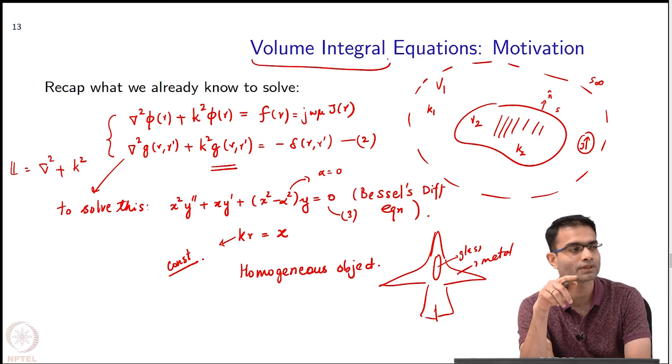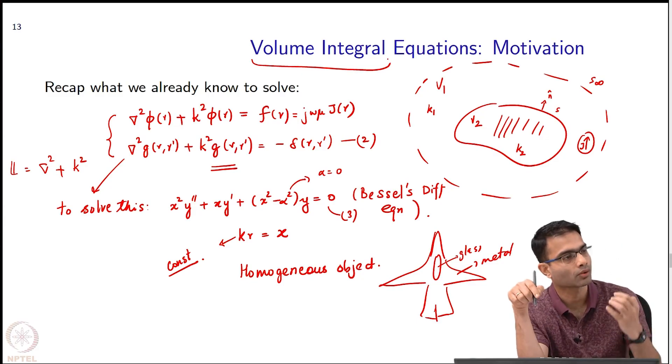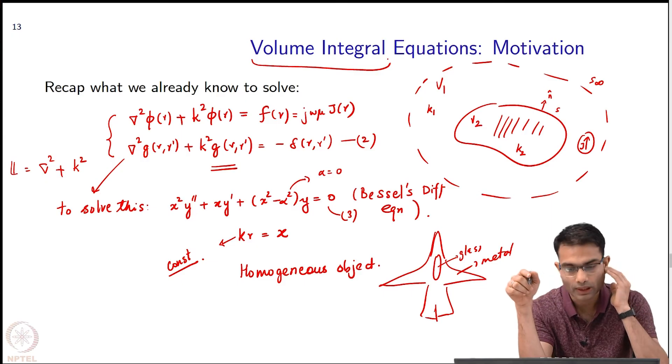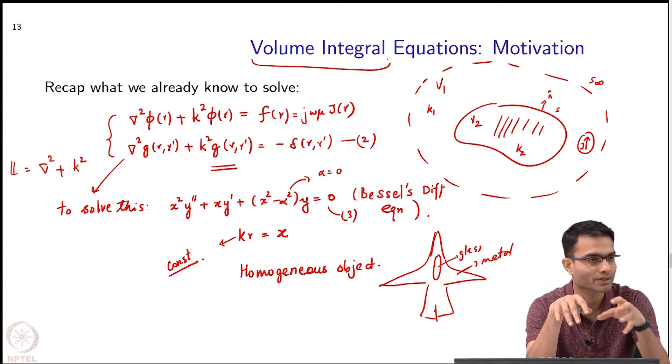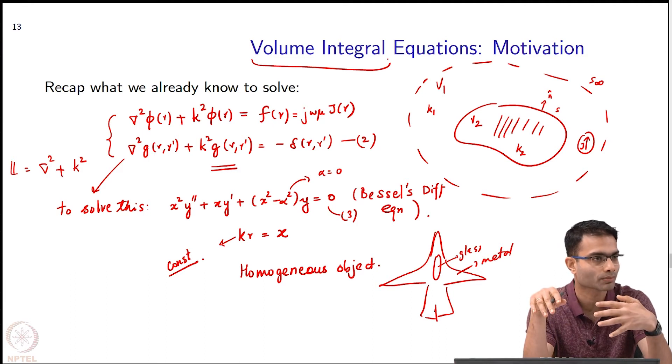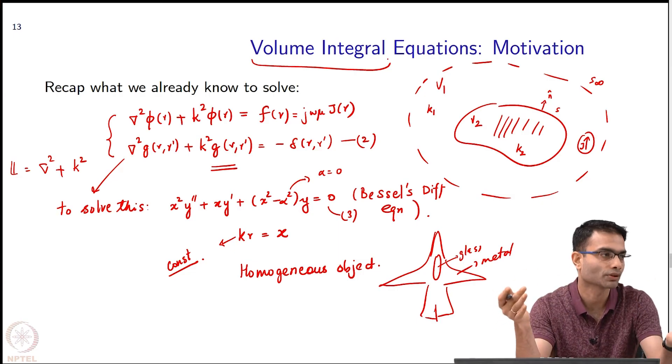As the word suggests, surface integral formulates the equations around the surface, volume integral goes into the volume and solves it. Advantage is I can model more difficult objects which have heterogeneity. What do you think would the disadvantage be or the downside? More computation, because computation is going to increase.